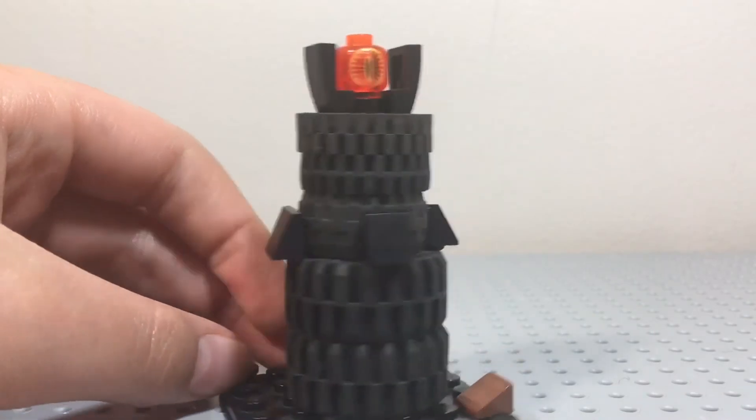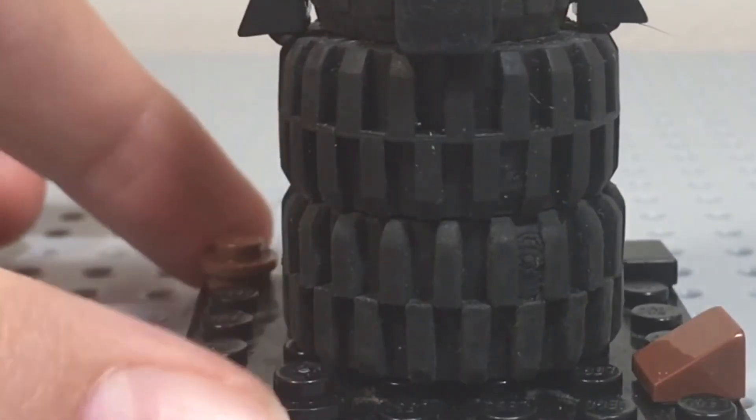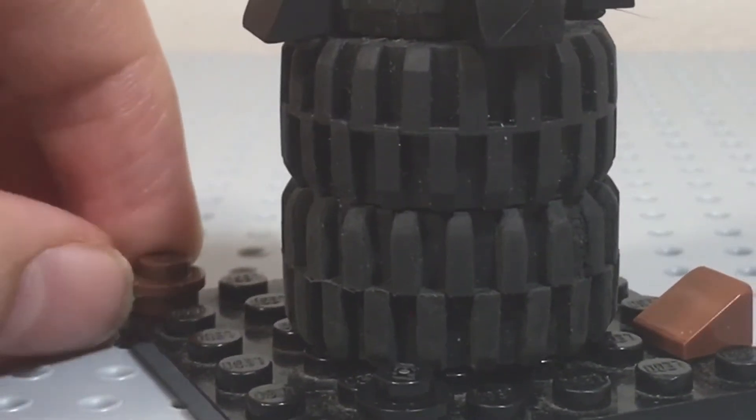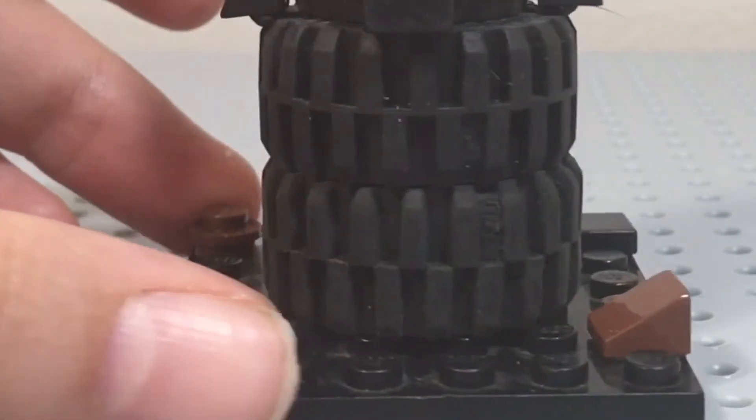So the bottom, let's just go from the bottom to the top. So the bottom just has a little black platform and then some brown and black pieces just to give a little bit of detail there.